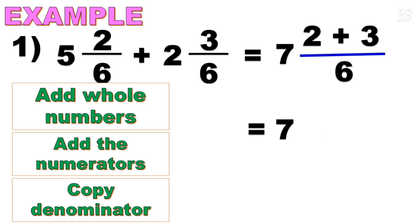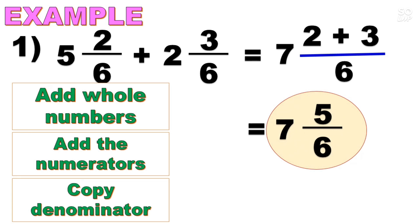Then simplify. We now have 7, and 2 plus 3 is 5, over 6. Therefore, our final answer is 7 and 5/6. That is how to add mixed numbers with similar fractions.